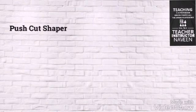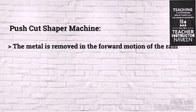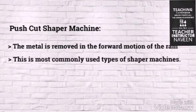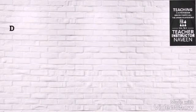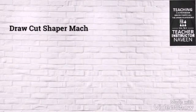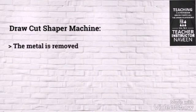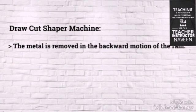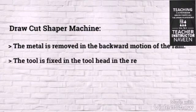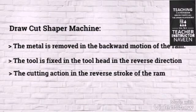In Push Cut Shaper Machines, the metal is removed in the forward motion of the RAM. This is the most commonly used type of Shaper Machine. In Draw Cut Shaper Machines, the metal is removed in the backward motion of the RAM. The tool is fixed in the tool head in the reverse direction, so that it provides the cutting action in the reverse stroke of the RAM.